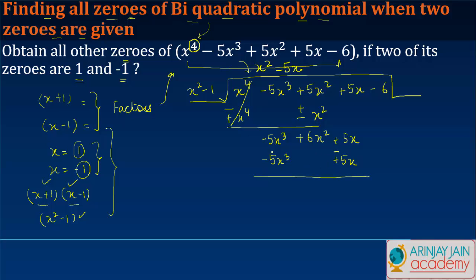This becomes minus, this becomes plus, knocked off, knocked off, +6x² - 6. If I just multiply this by 6, I get 6 times x², 6x², 6 times -1 gives me -6. This becomes minus, this becomes plus. Knocked off.